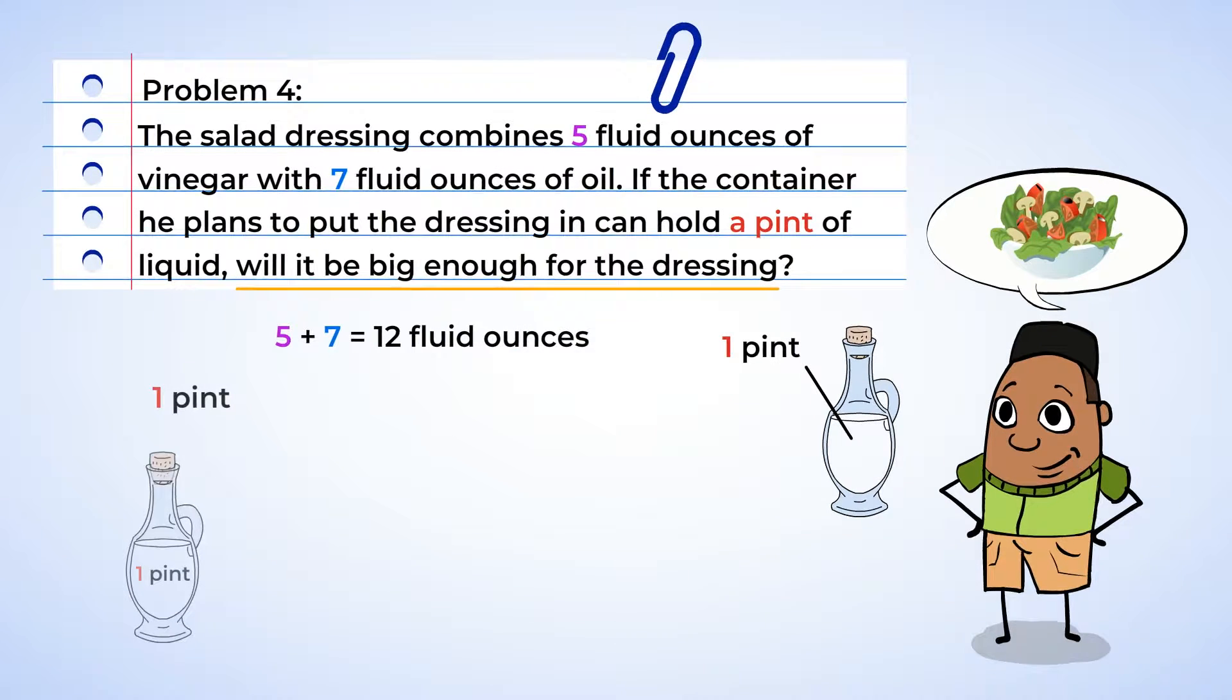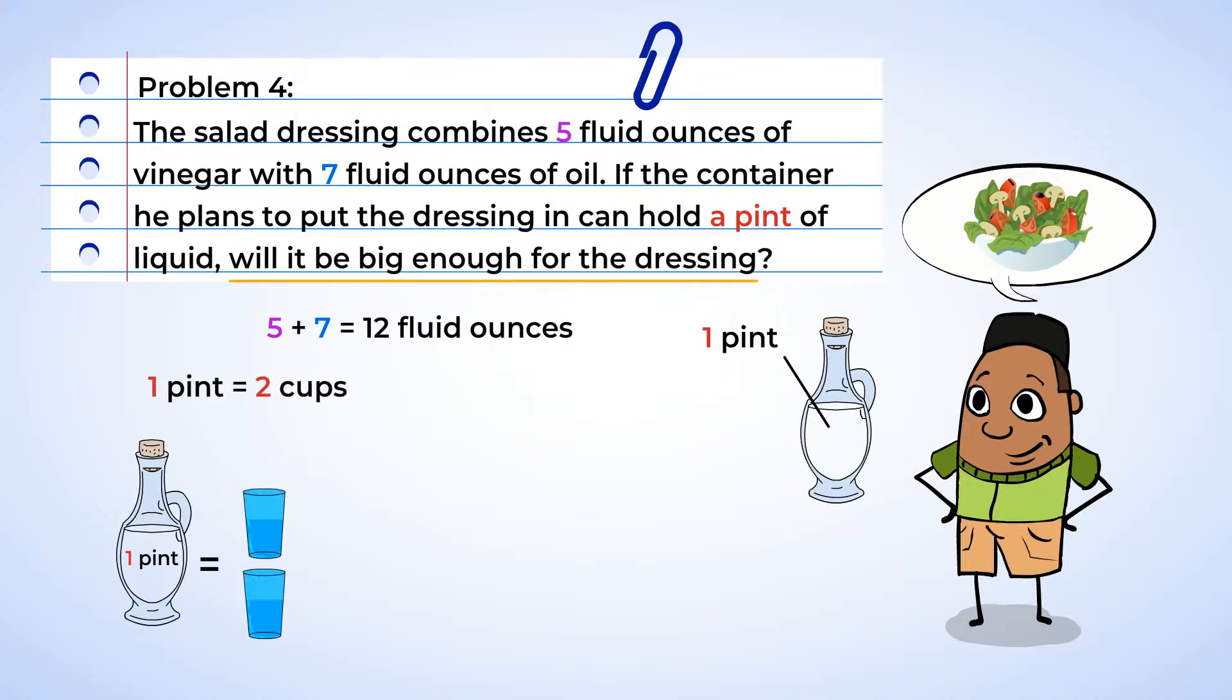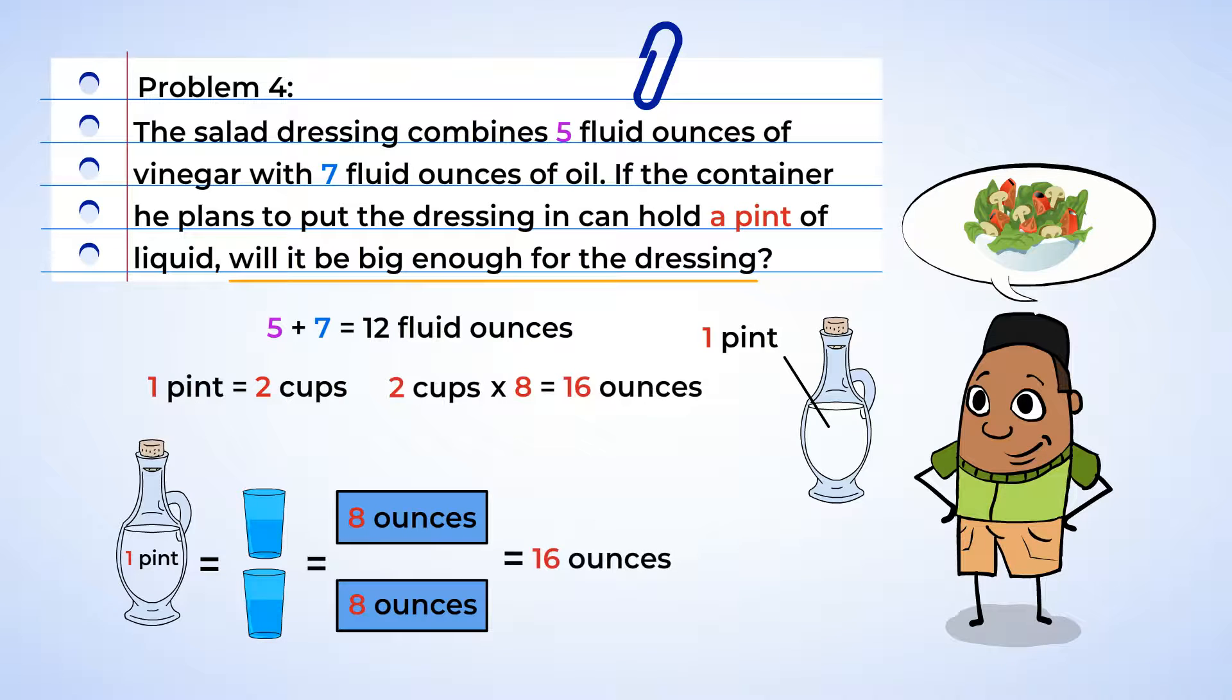And now, let's see if the container is big enough. All right, 1 pint is equal to 2 cups. And there are 8 ounces in 1 cup. And since each cup is 8 ounces, then 2 multiplied by 8 is 16. So, a pint is equal to 16 ounces. And 16 is greater than 12. So, Will's container is large enough to hold all his dressing. Crisis averted! No vinaigrettes going to be spilled.